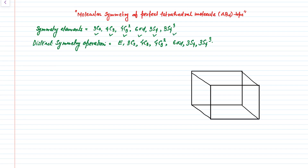The distinct symmetry operations of this molecule are: one identity, 3C2, 4C3, 4C3 squared, 6 sigma D, 3S4 and 3S4 cubed. These are the symmetry elements present in the perfect tetrahedral molecule, and that is why the order of symmetry of this molecule is 24.